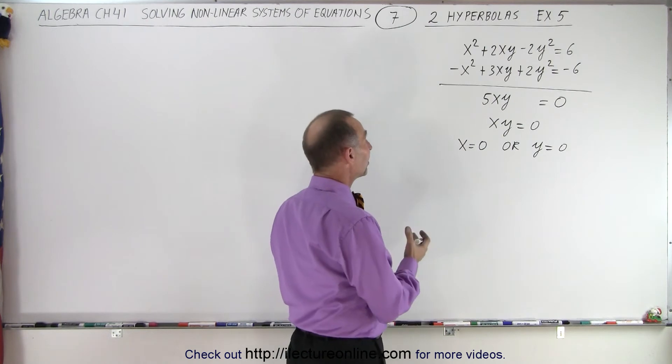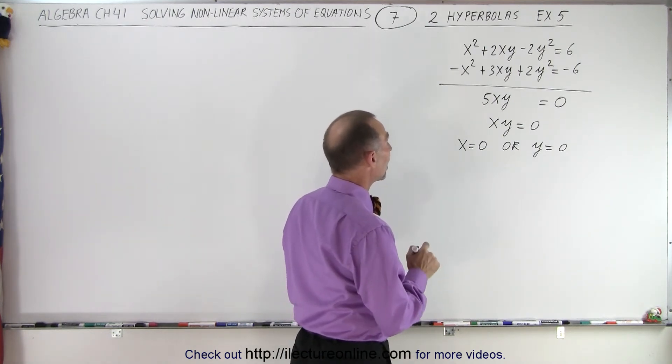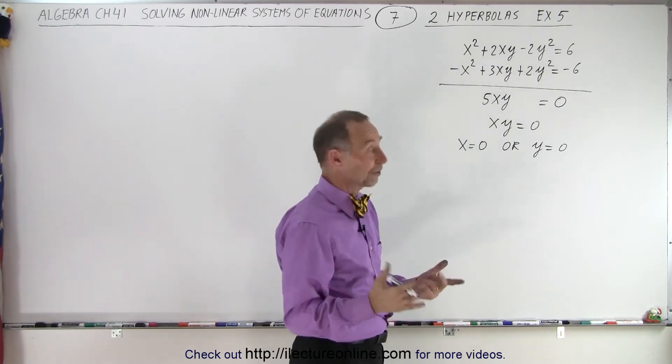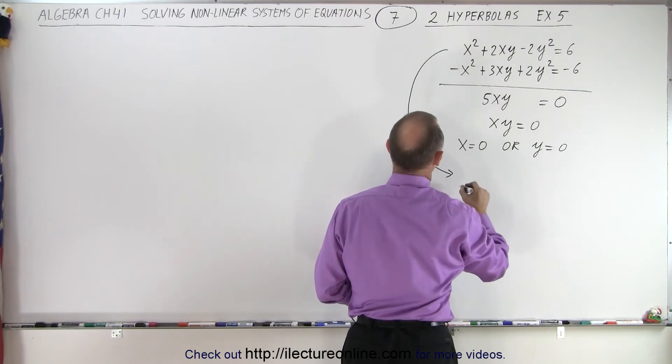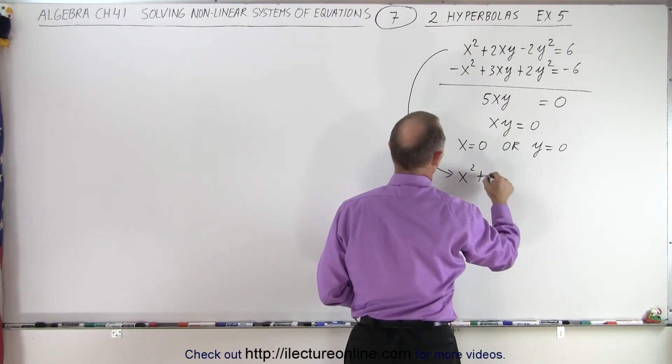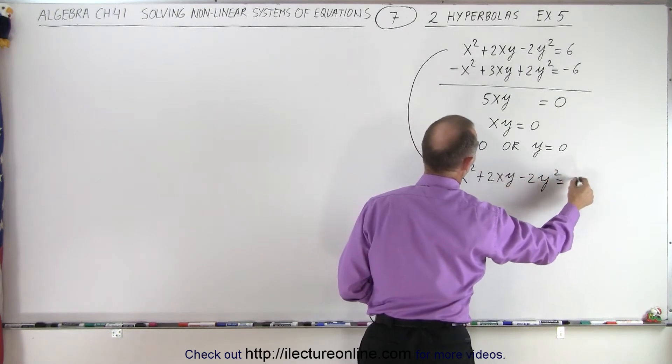So when x equals 0, what will y be equal to? If y equals 0, what will x be equal to? So what we need to do now is plug that back into one of our two equations. So let's go ahead and plug that into this equation. So we end up with x squared plus 2xy minus 2y squared is equal to 6.